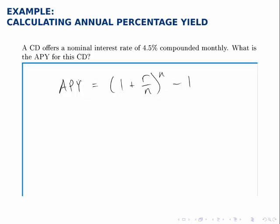To calculate the annual percentage yield, or the effective interest rate on this account, we just plug in everything that's given. The interest rate is 0.045, written as a decimal. n is 12, since it's compounded monthly. So we replace that both in the denominator and in the exponent with 12.